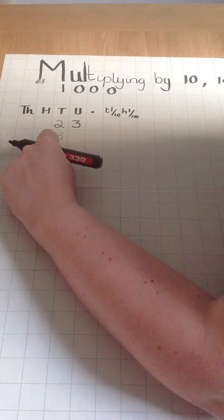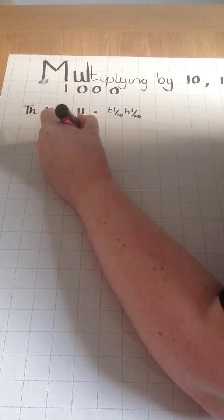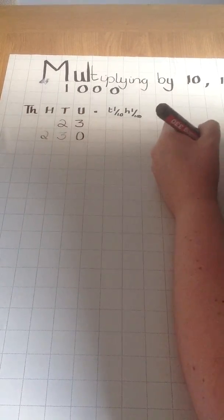I'm going to write that in the hundreds column, and then I'm going to place the zero in as a placeholder.